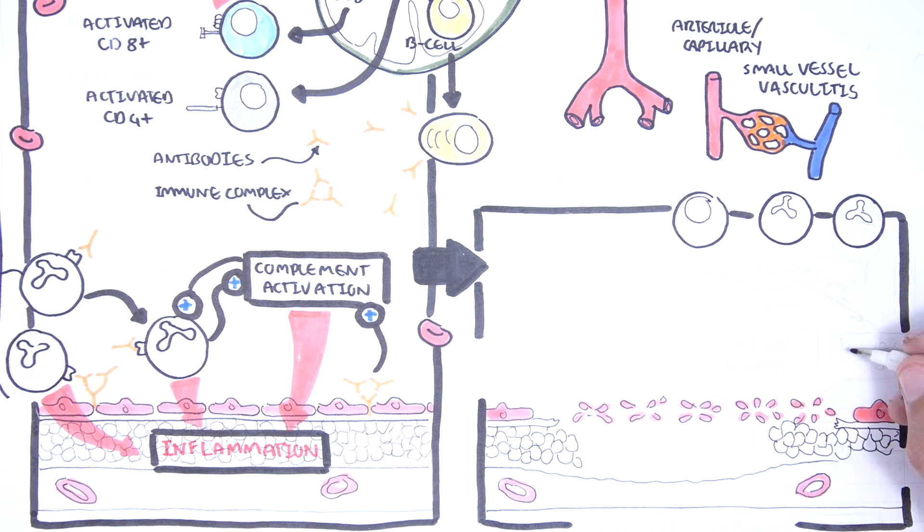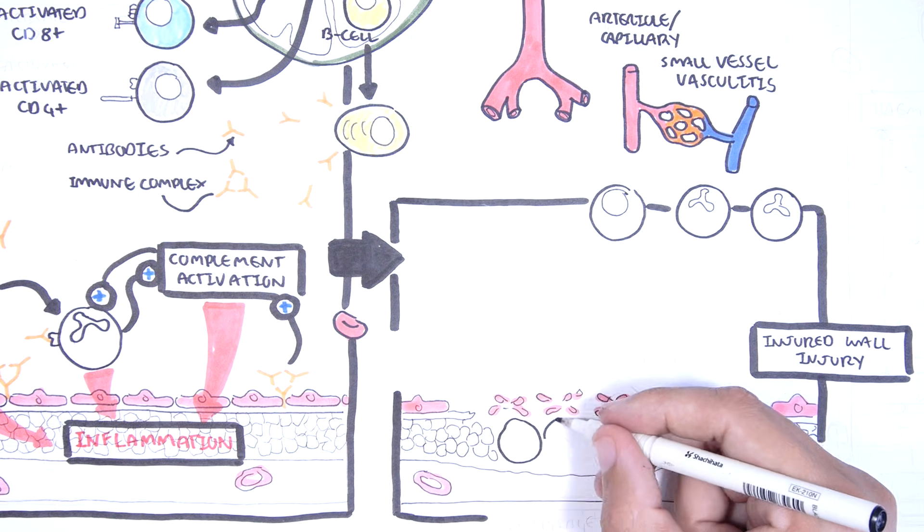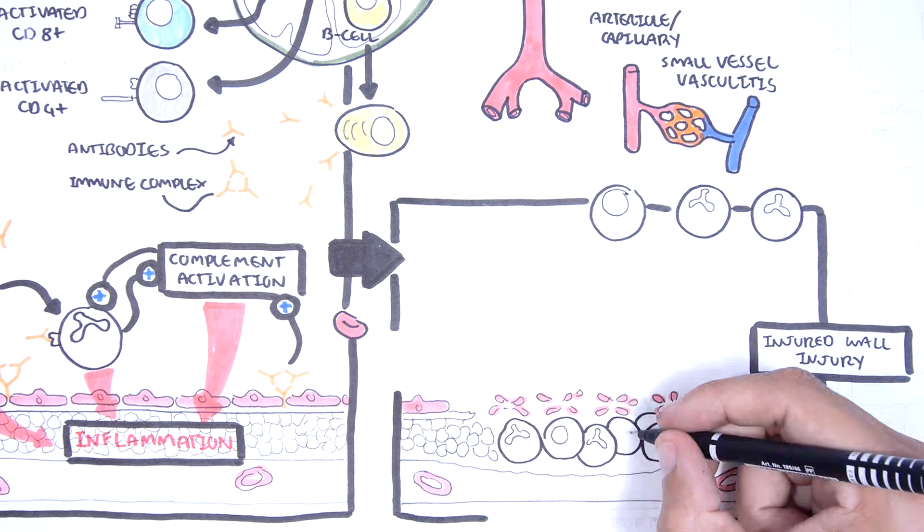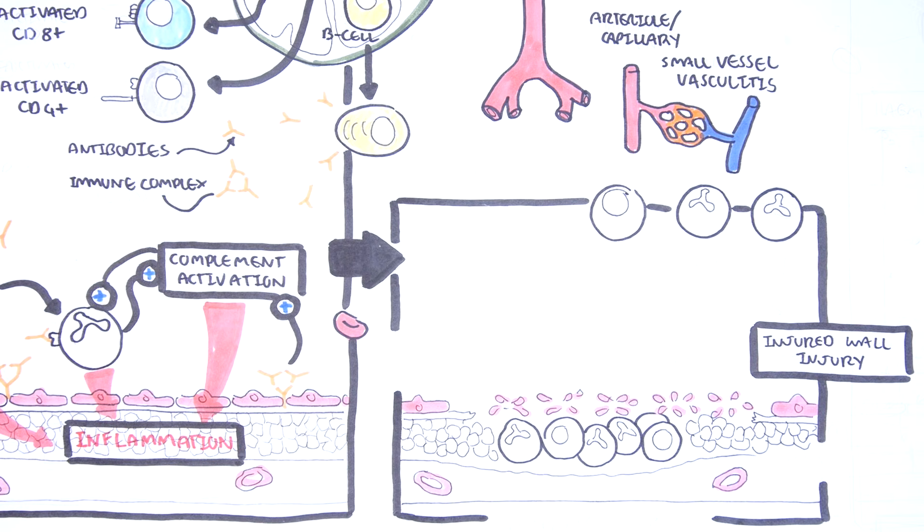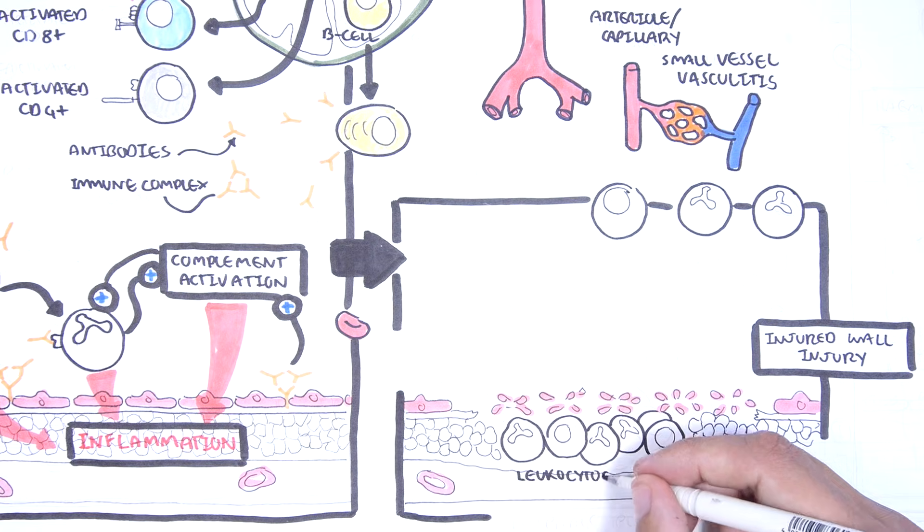Inflammation of endothelial cell lining and the deeper layers of the blood vessel causes vessel wall injury. In some vasculitis types which have cutaneous manifestations, you can actually see neutrophil infiltration into the vessel wall. This is termed leukocytoclastic vasculitis.